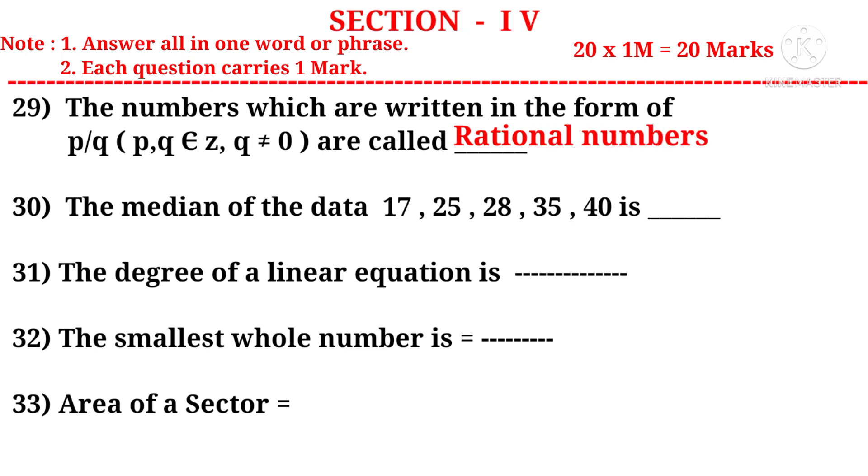Question 30: The median of the data 17, 25, 28, 35, and 40 is. Observe that the items are in ascending order, so the middle item is the median. Answer is 28. Question 31: The degree of a linear equation is 1. Question 32: The smallest whole number is 0. Question 33: Area of a sector equal to X/360 × πR^2.